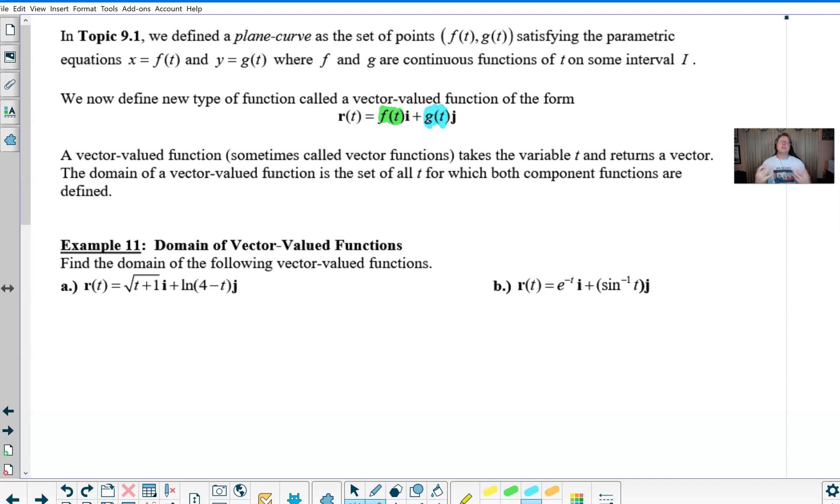No more are they just single numerical values like 3i plus 4j, but they're expressions of t, which means we can do a lot of really cool stuff with them. A vector-valued function, sometimes called a vector function, always takes the variable t and returns a vector. The domain of a vector-valued function is the set of all t for which both component functions are defined. I think the key word here, my friends, is both.